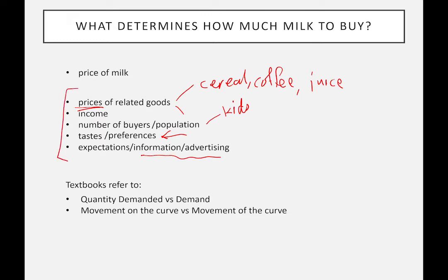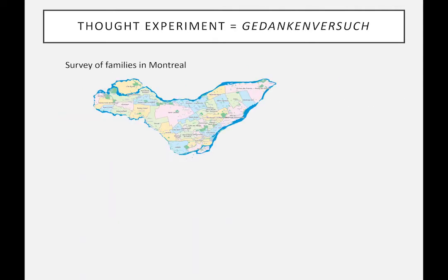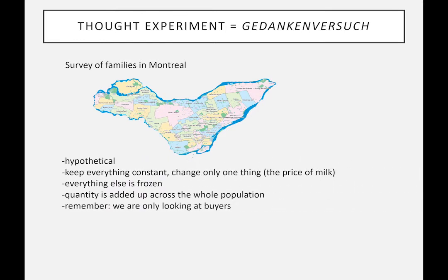Now I'll do a thought experiment — what Einstein called a Gedankenversuch when developing his theory of relativity. I'm going to imagine surveying all the families in Montreal, knocking on every door, asking how much milk they want for the next four weeks, telling them I'll deliver it. When I conduct this experiment, I keep everything constant — cereal, coffee, lactose intolerance, number of kids, advertising — all frozen. The only thing I'm going to change is the price.